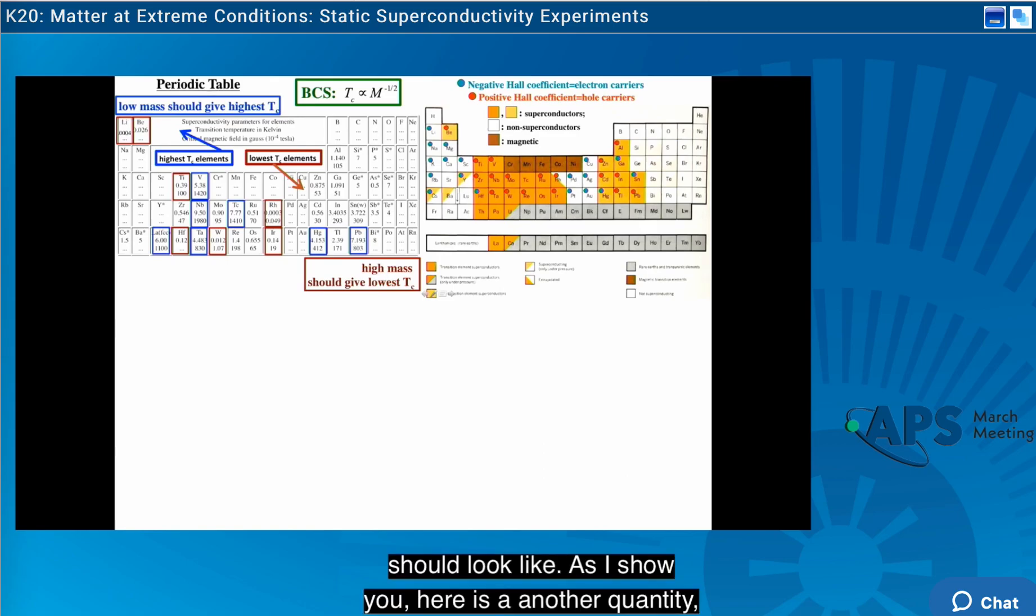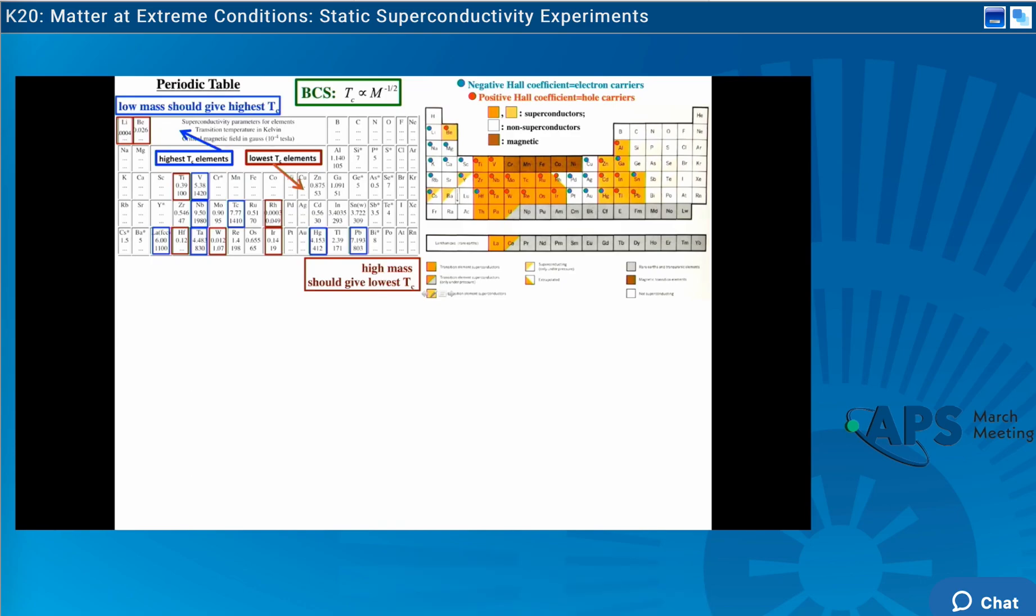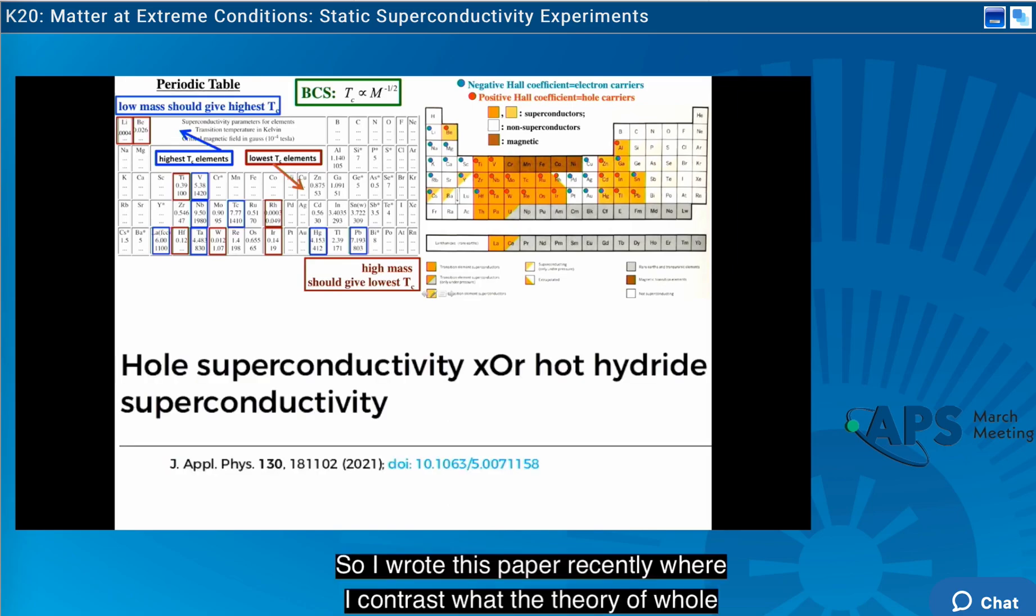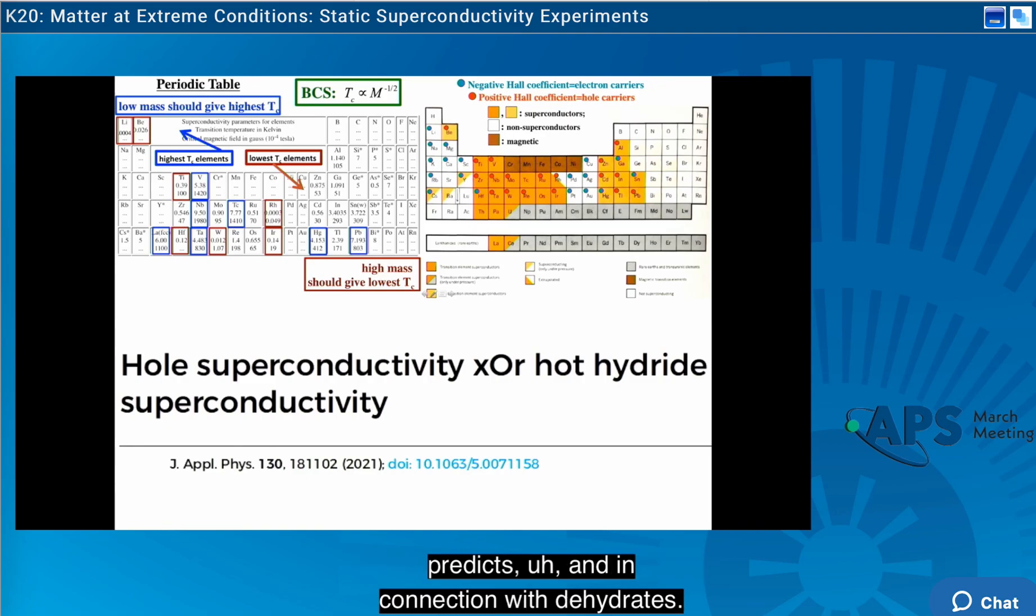So here's the contrast of what BCS says the elements should look like. As I show you, here is another quantity, the Hall coefficient. And what this shows is that superconductivity appears when elements have positive Hall coefficient, and when they have negative Hall coefficient, most of them are not superconductors. So I wrote this paper recently where I contrast what the theory of hole superconductivity predicts versus what the conventional theory predicts in connection with the hydrides.